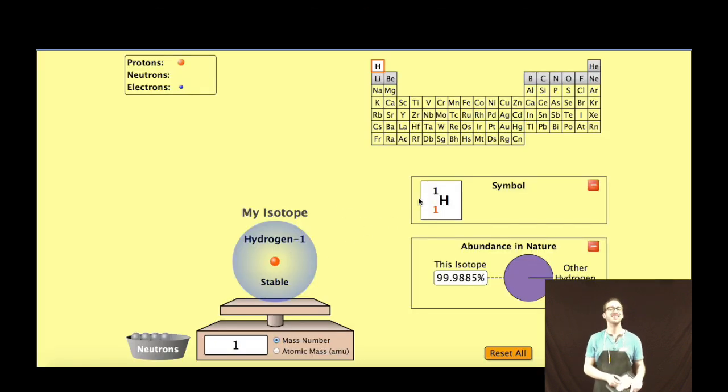As an example, let's take a look at hydrogen. Here's a model of one isotope of hydrogen. Atomic number is one because there's one proton, and its mass is one because there's only one subatomic particle in the nucleus, that one proton. Notice if I add a neutron to my nucleus, the mass changes but my atomic number stays the same.